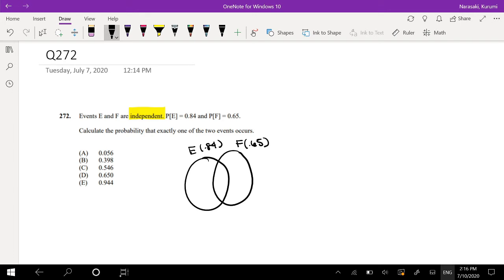And for independent events, we have that formula: P(E and F) is equal to probability of E times probability of F. So in our case, that's going to be 0.84 times probability of F, which is 0.65, which is equal to 0.546.